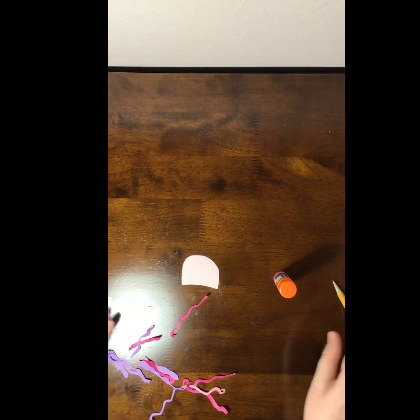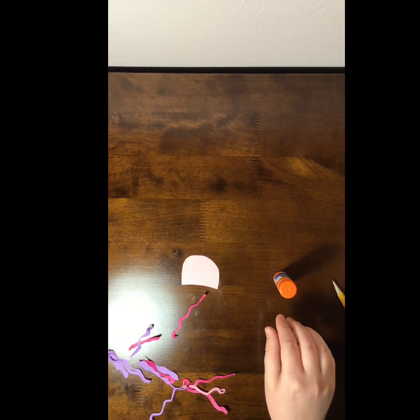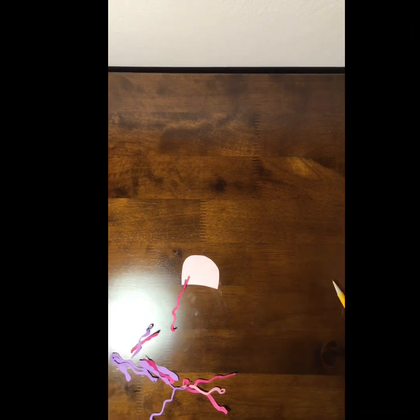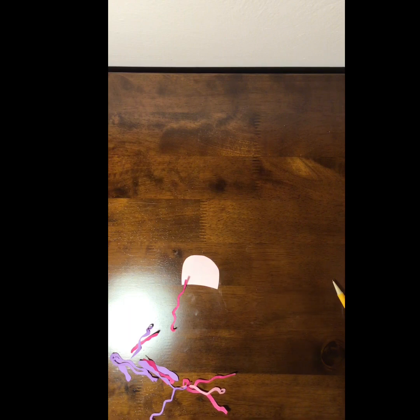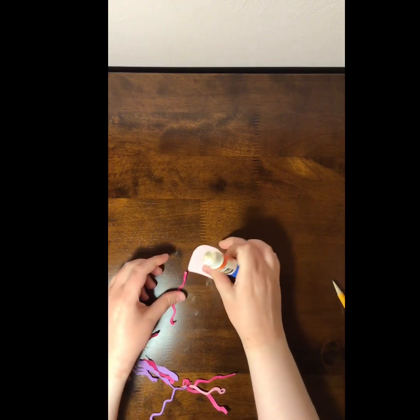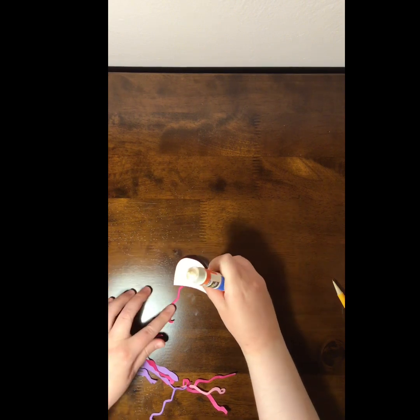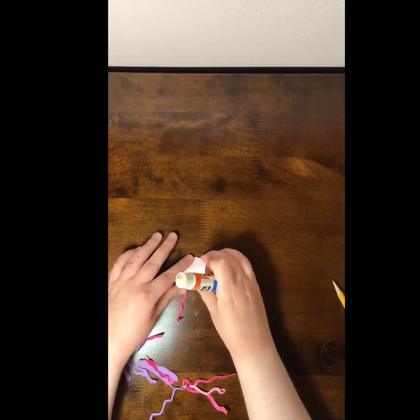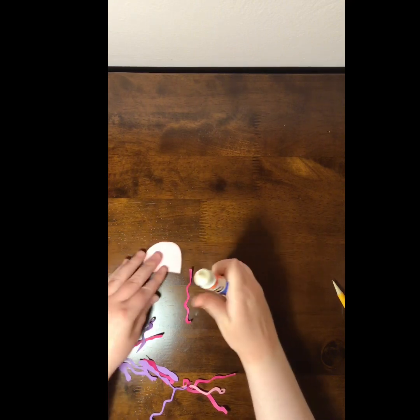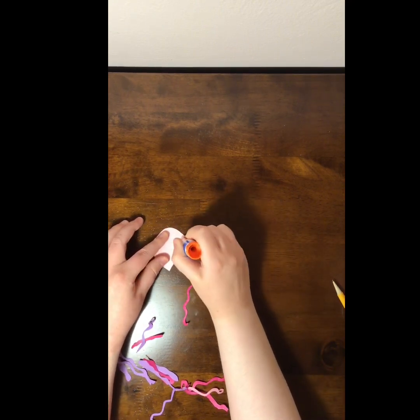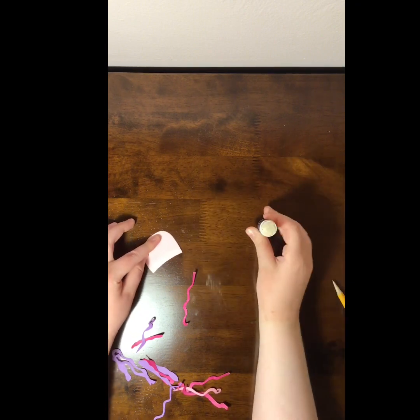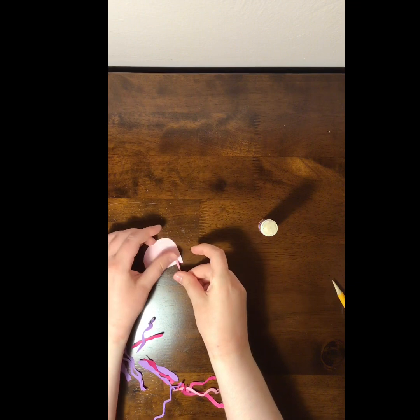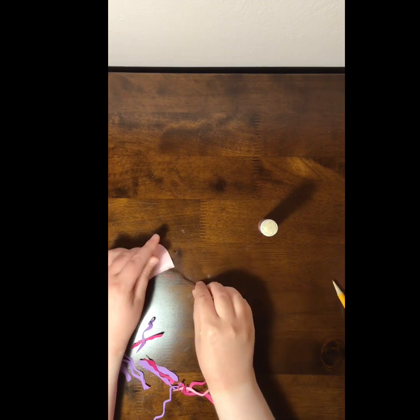So I'm just trimming my jellyfish in the shape that I want it to be. And you are going to want to take your glue stick and apply glue onto the body of the jellyfish. And then you're going to stick on the tentacle. I'm just doing like a line at the bottom there to glue all those on. So I'm going to start with one.